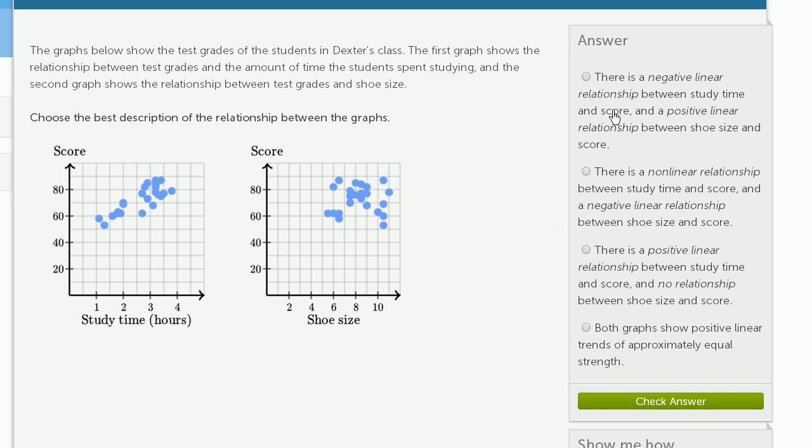Before looking at the answer choices, let's look at the actual graphs. This one on the left shows a positive linear relationship - I could almost fit a line that would go just like that. It makes sense that the more time you spend studying, the better score you would get. For a certain amount of time studying, some people might do better than others, but there does seem to be this relationship.